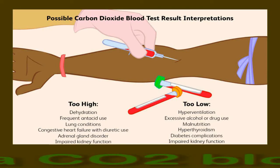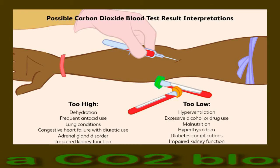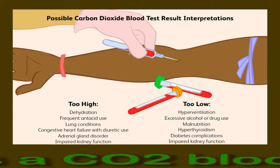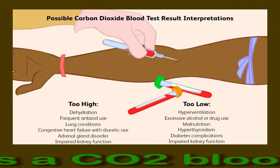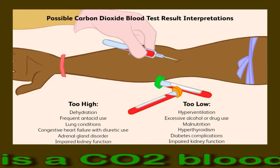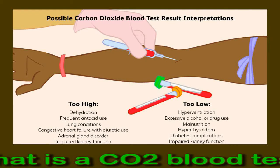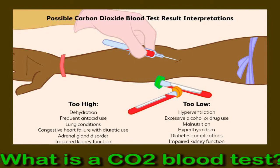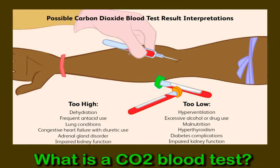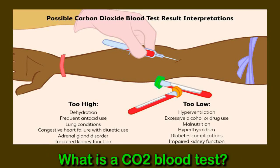What is the carbon dioxide blood test? The carbon dioxide blood test measures the amount of carbon dioxide in the blood, which is present in the form of carbon dioxide, bicarbonate (HCO3), and carbonic acid (H2CO3). It mainly occurs in the form of bicarbonate. As part of its normal functions, the human body naturally produces certain acids and bases that balance each other. Any disruption to this balance can be an early sign of an underlying medical condition.